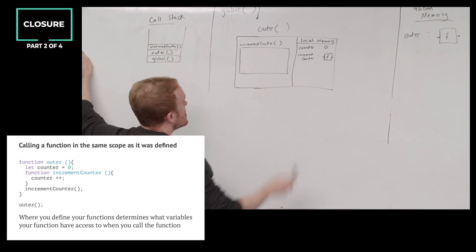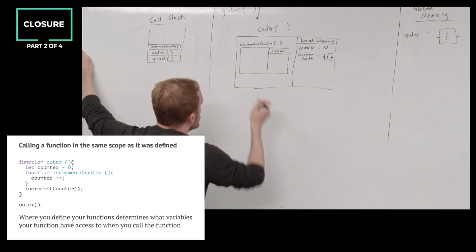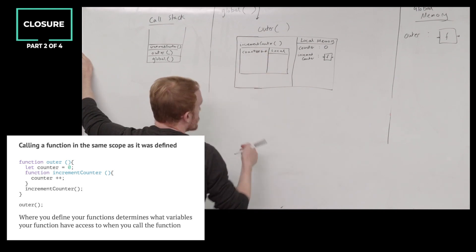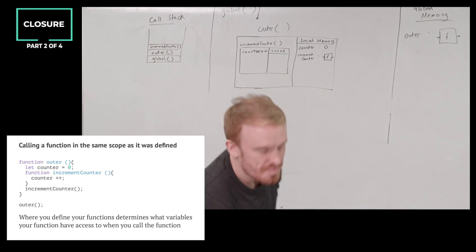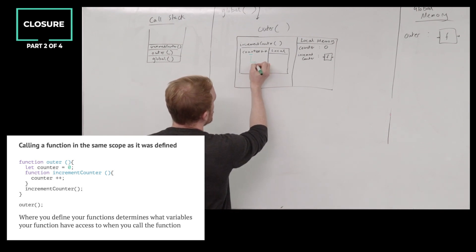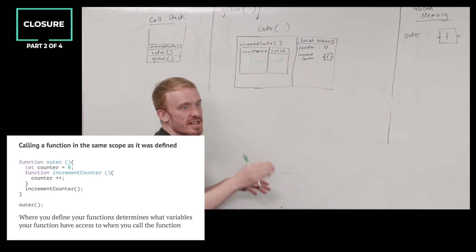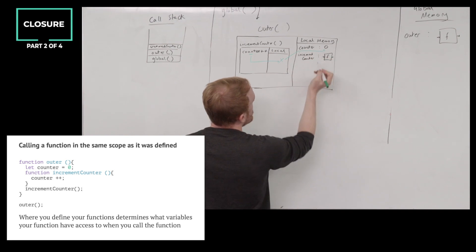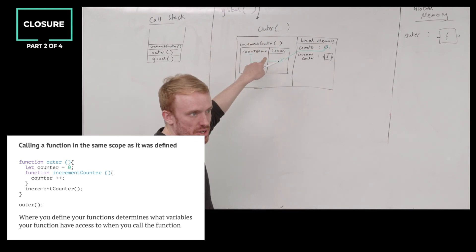Into increment counter we go. What is the first line of code we encounter? Counter++. So we're going to increment this counter, but we haven't declared anything inside local memory. We look for counter there first — in the local memory of the local execution context. Do we find it? No, we do not. We did not find our counter in increment counter's execution context local memory.